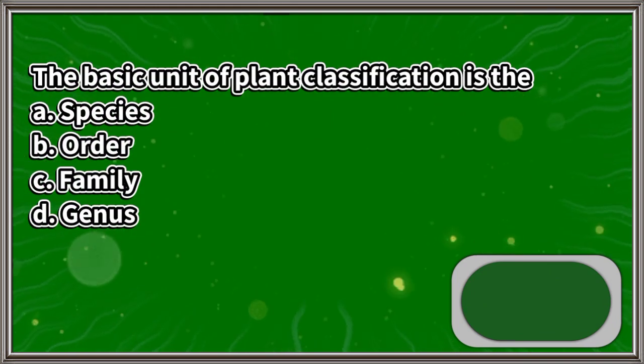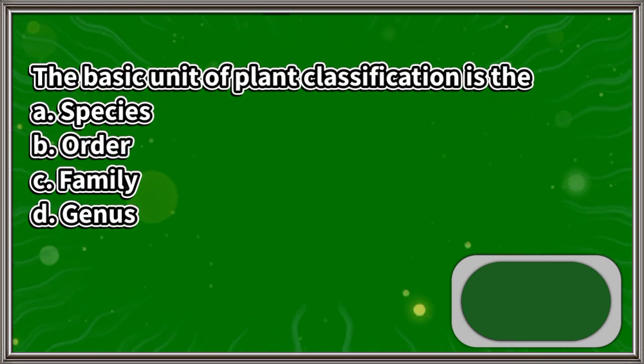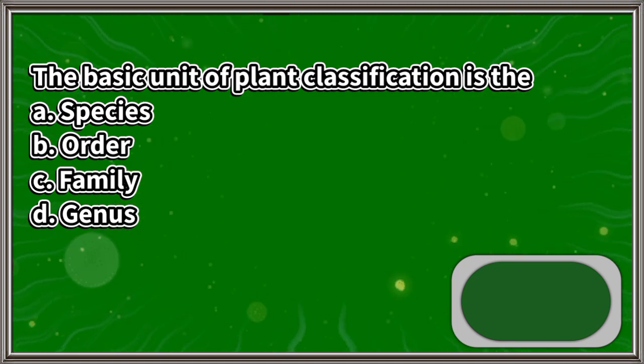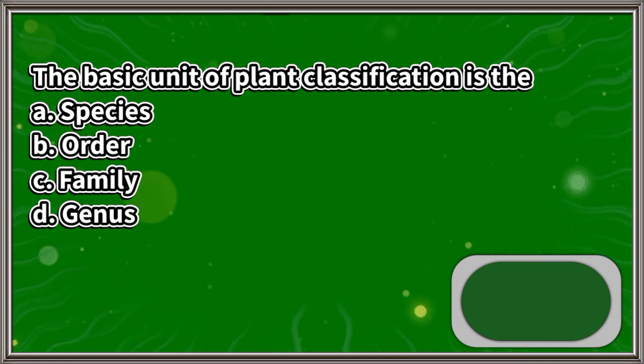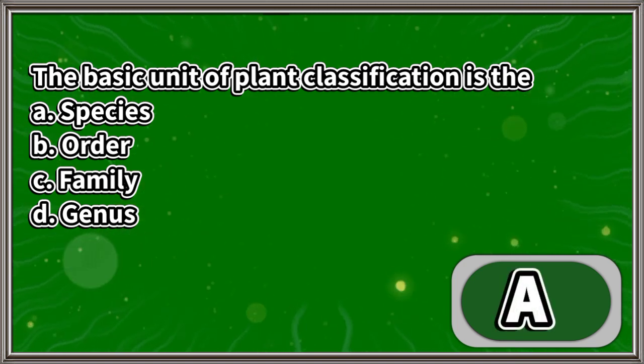The basic unit of plant classification is the: A. Species, B. Order, C. Family, D. Genus. The answer is letter A.